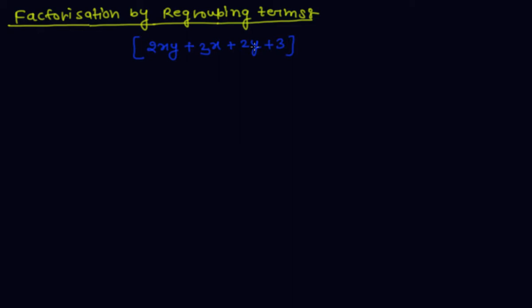So I rearrange and regroup these terms in such a way that at least two terms have something common, and the other terms have something else common. Now, I regroup this as 2xy plus 2y plus 3x plus 3.